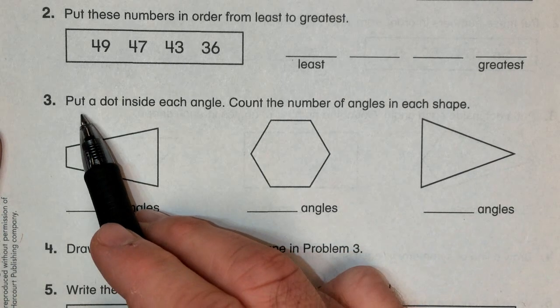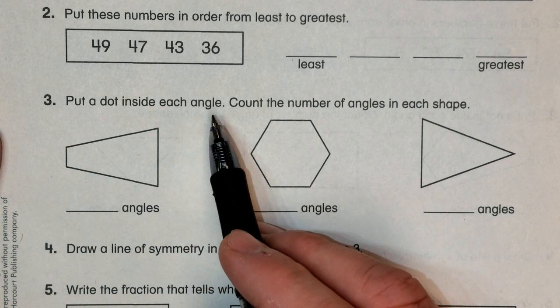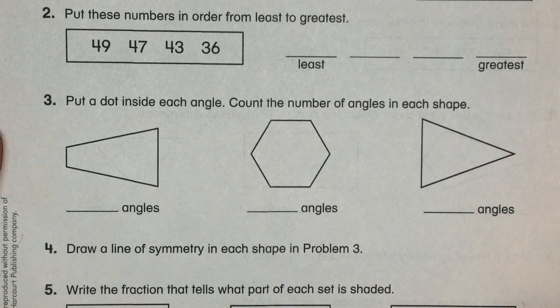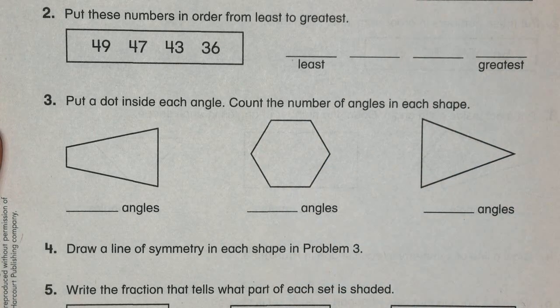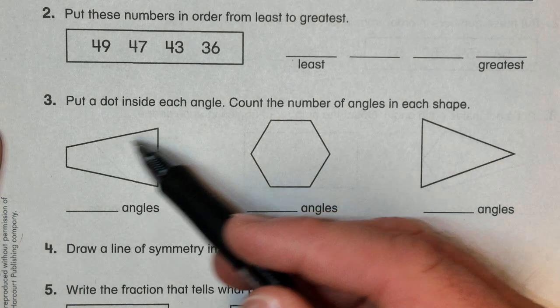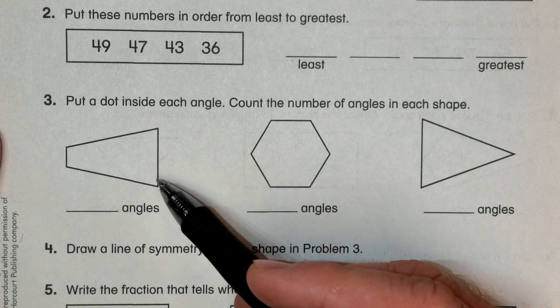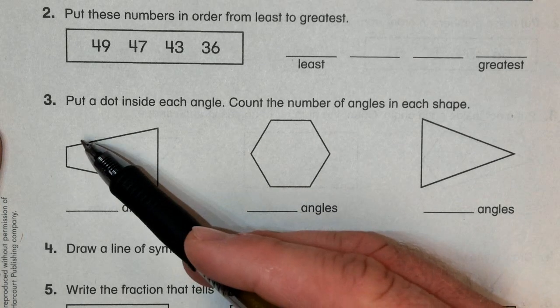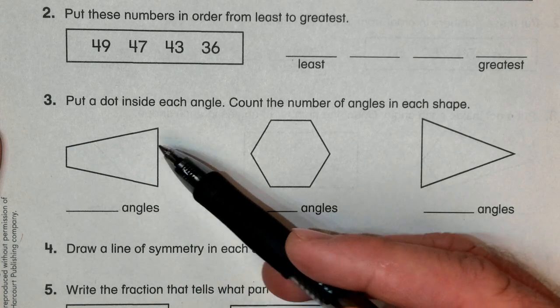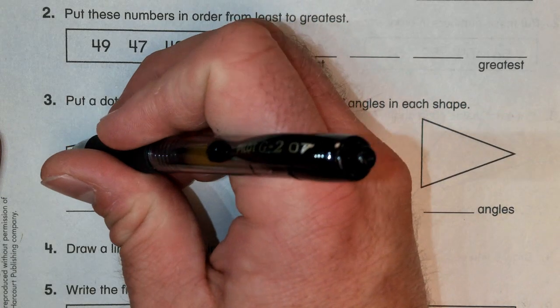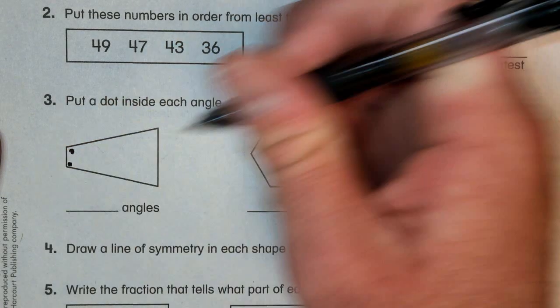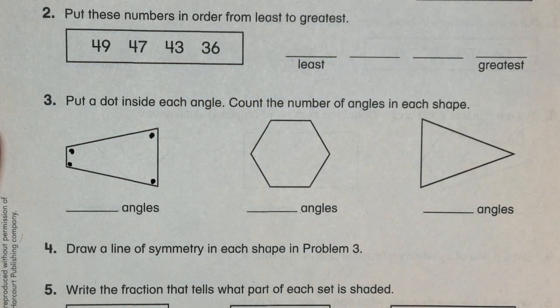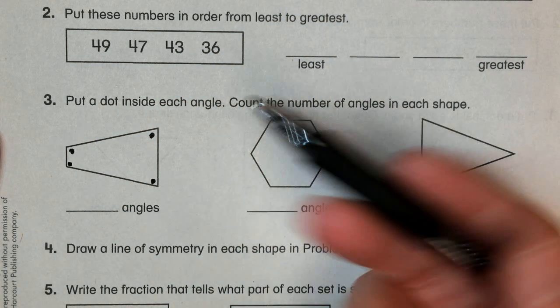So the first part of our lesson says to put a dot inside each angle, and then we're going to count the number of angles in each shape. Now, if you remember, an angle is kind of like a vertex, that just means we're talking about the angular point. We've got a lot of angular points in these shapes in front of us. This particular shape has one, two, three, four angles. So I would do four dots for this polygon, and then my angles are just four.